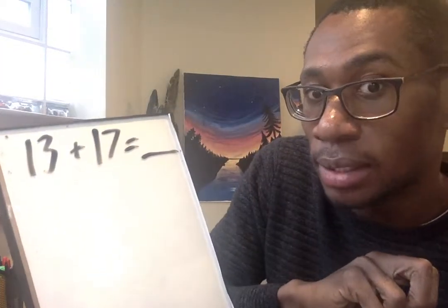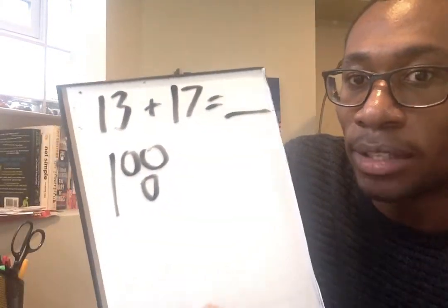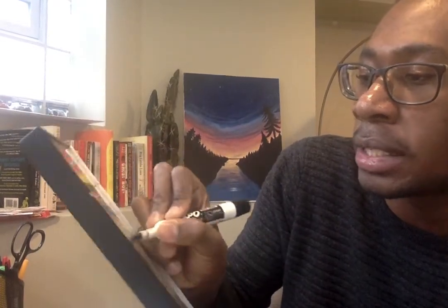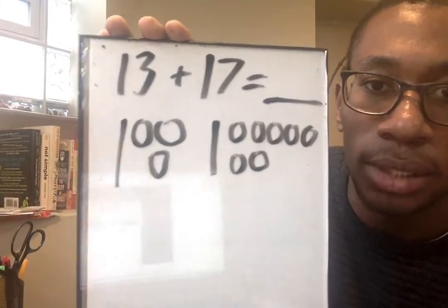13, showing as my base-10 pictures in quick tens and quick ones. So 10, 11, 12, 13. 17, base-10 picture right away. Get ready. 10, 11, 12, 13, 14, 15, 16, 17. It looks just like this.